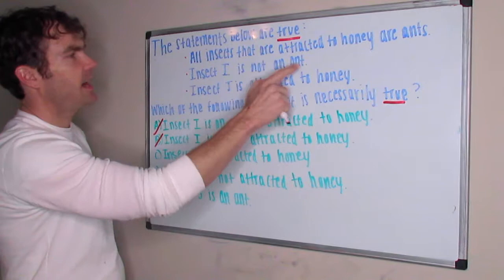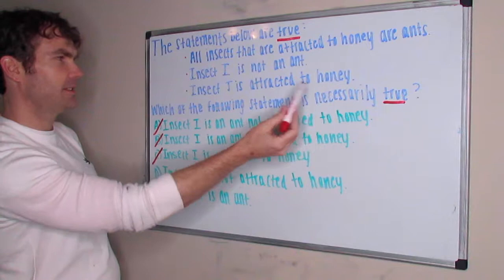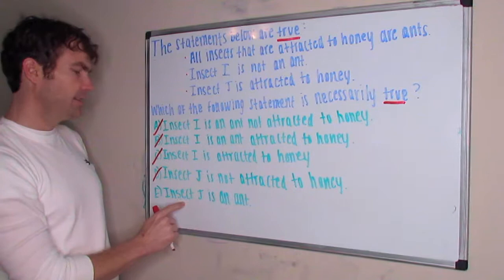Insect J is not attracted to honey. But insect J IS attracted to honey is what this says, so this is just directly contradicting the statement here, so it's definitely out.